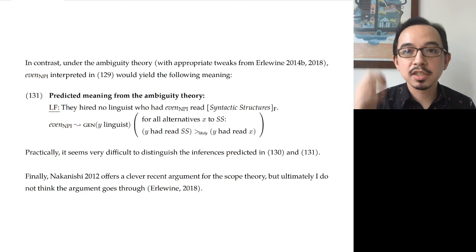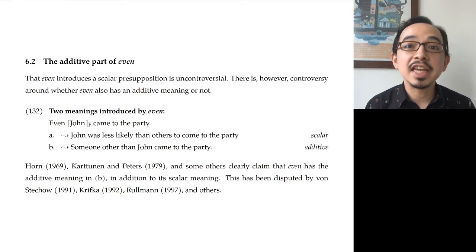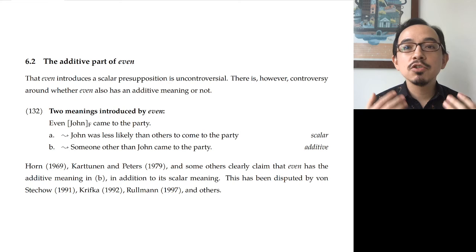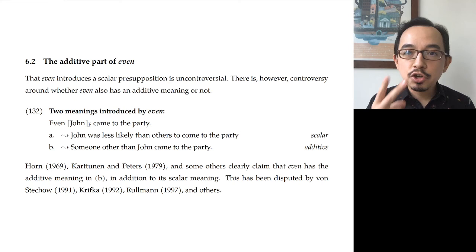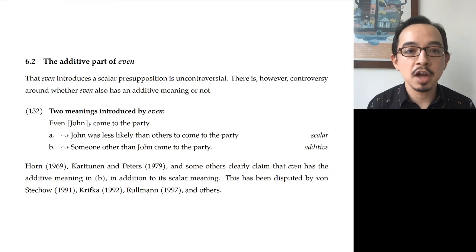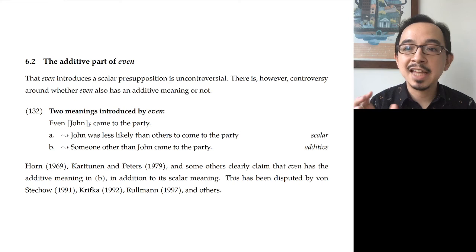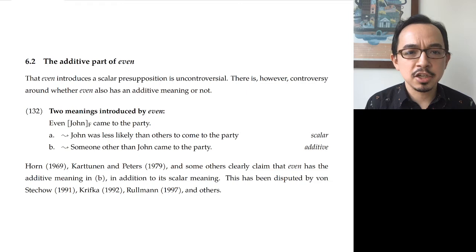I want to move on to another set of considerations related to scalar particles, having to do with the additive part of even. English 'even' introduces a scalar inference, but it often also feels like there's an additive meaning. For example 132, 'Even John came to the party': in addition to the scalar part — that John coming is less likely than others coming — there's also a feeling that someone other than John came as well. It seems strange to say 'Even John came to the party' if John was the only one who came.